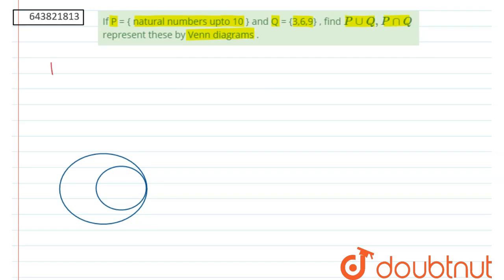From here, P has the elements natural numbers up to 10. So it will be 1, 2, 3, 4, 5, 6, 7, 8, 9 and 10. And set Q has element 3, 6, 9.